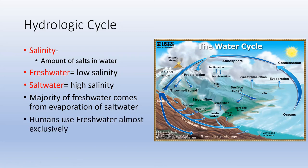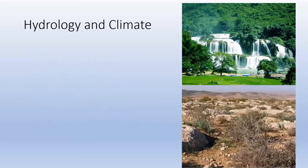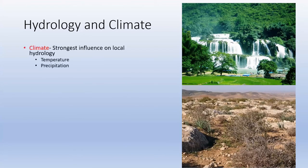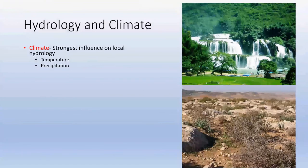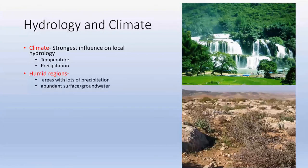As humans, we use almost exclusively fresh water for nearly all our needs — not just drinking and bathing, but also industrial applications and generating electricity. Hydrology and climate are highly related; climate is the strongest influencer on local hydrology, especially temperature and precipitation.